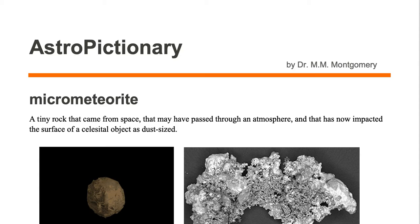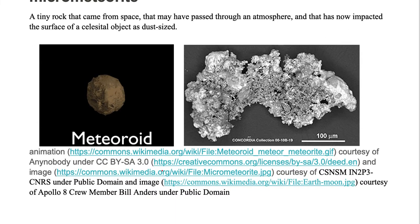A meteorite is a tiny rock that came from space that may have passed through an atmosphere and has now impacted the surface of a celestial object. Here on the left we're looking at a meteoroid, which is a tiny or small rock that came from space. This rock may or may not pass through an atmosphere, and if it impacts a surface as small dust-sized particles, then we would call it a micrometeorite.